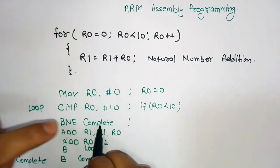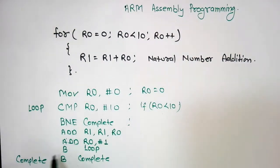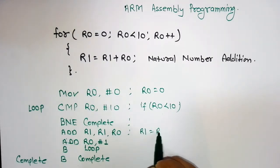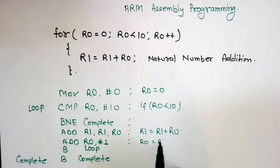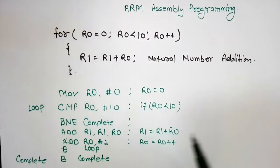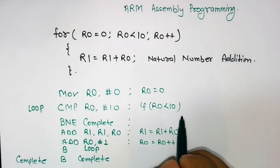This code will, if R0 is equal to 10, complete execution and exit. Otherwise, this line of code does R1 equal to R1 plus R0, this one increments R0 (R0 plus plus), and this one loops back to check again whether R0 is equal to 10 or not.